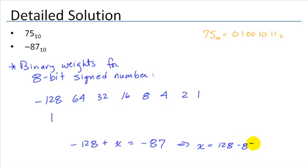Looks like x is then 128 minus 87, or the value 41. So we choose weights to build up the value 41. We don't need 64. We do need 32. Let's see how we're doing there. 41 minus 32 is 9. Looks like we need the 8 and the 1. And this 8-bit pattern then becomes the representation for negative 87 base 10.